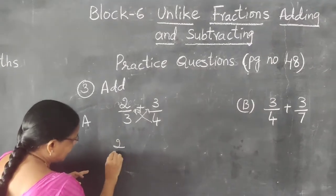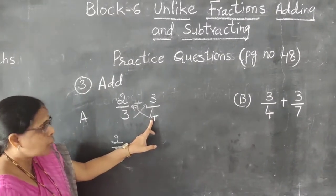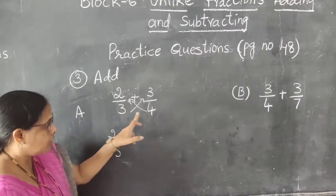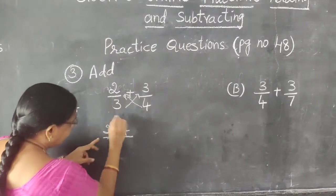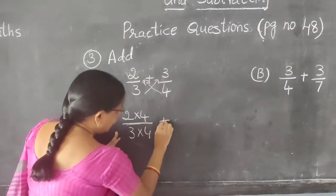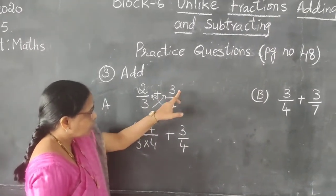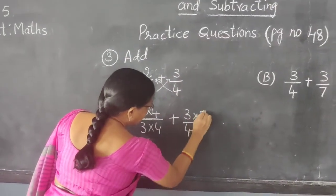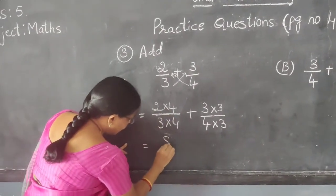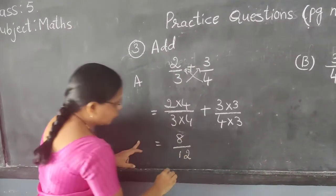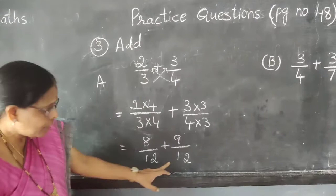For 2/3, we multiply both numerator and denominator by 4. And for the other fraction 3/4, we multiply both numerator and denominator by 3. So: 2 into 4 and 3 into 4, plus 3 into 3 and 4 into 3. That gives: 2 into 4 is 8, 3 into 4 is 12, plus 3 threes are 9, 4 threes are 12.